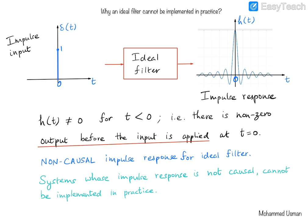Causality means that the impulse response h(t) should be zero for t less than zero. The impulse response should be zero for all negative time — that is the meaning of causality. Clearly, the impulse response of the ideal filter, which is a sinc function, has a non-zero value before t = 0. That means there is an output before the input is being applied, which is physically not possible. This is what we mean when we say the impulse response of an ideal filter is non-causal, and systems whose impulse response is non-causal cannot be implemented in practice.